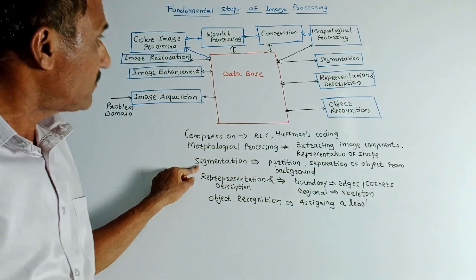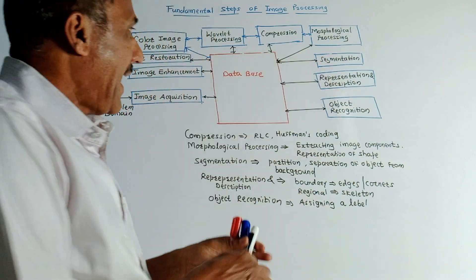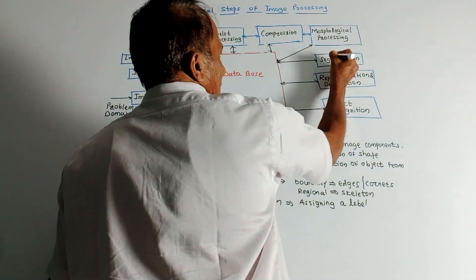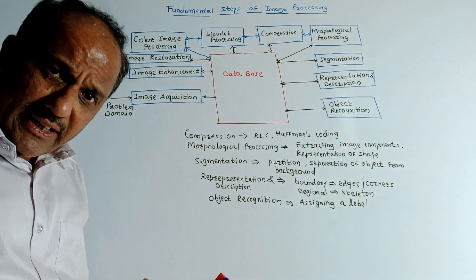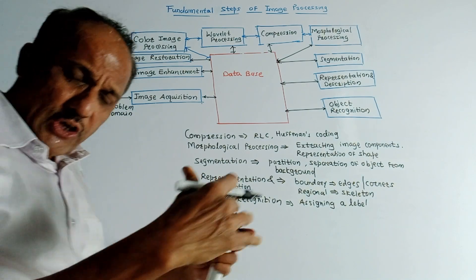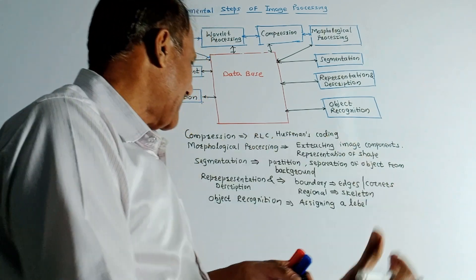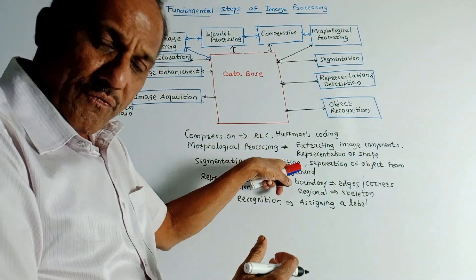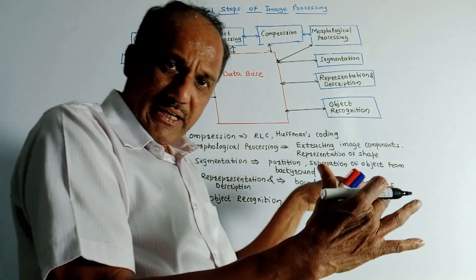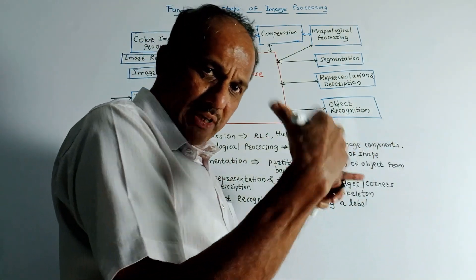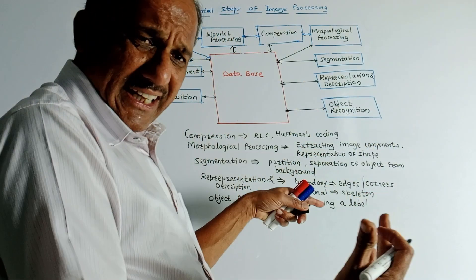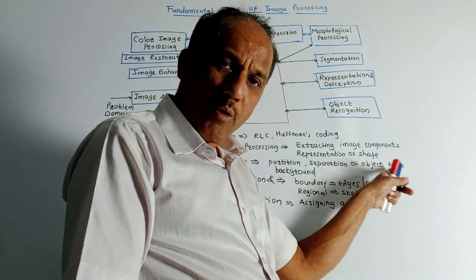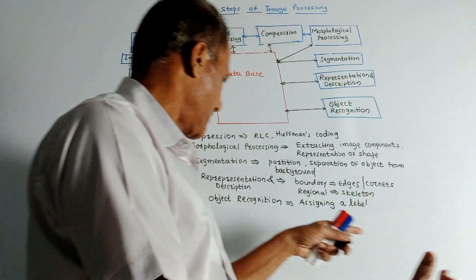The next block is segmentation. As the name indicates, we can divide the image into different segments — we can make a partition of the available image into different segments. Basically, it represents the separation of an object from its background.